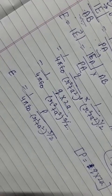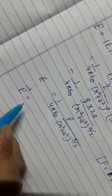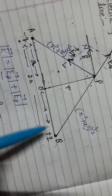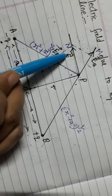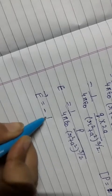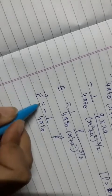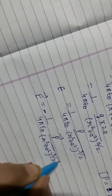To convert to vector form, we note the direction. The dipole moment is always directed from negative charge to positive charge. However, the direction of the electric field on the equatorial line is opposite to the direction of the dipole moment. Therefore, we write a negative sign. E vector equals negative 1 upon 4 pi epsilon naught times P vector upon (R squared plus A squared) to the power 3/2.